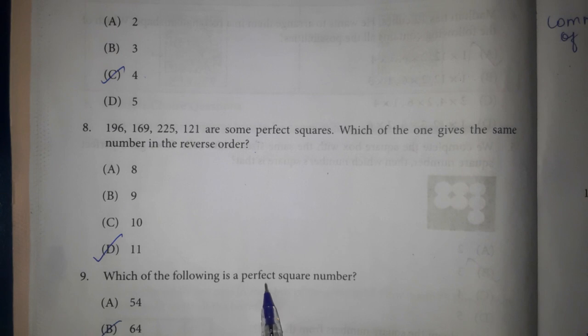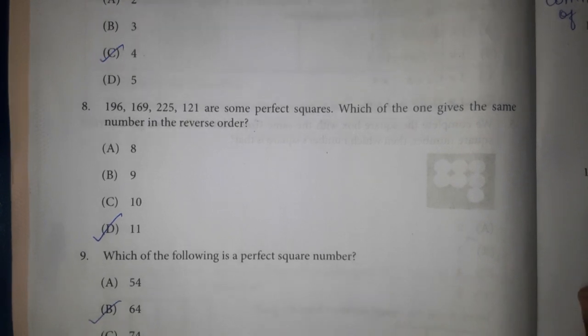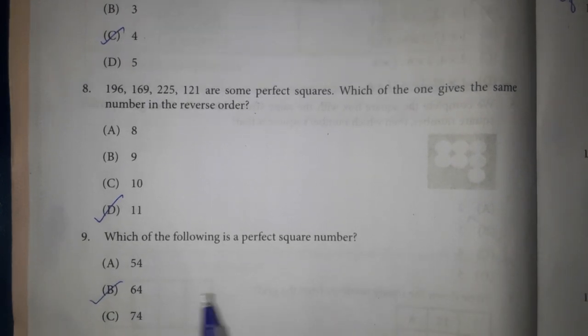9th one. Which of the following is the perfect square number? Answer option B. 64.